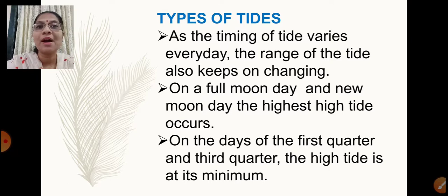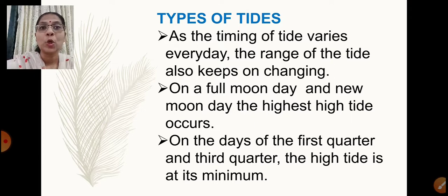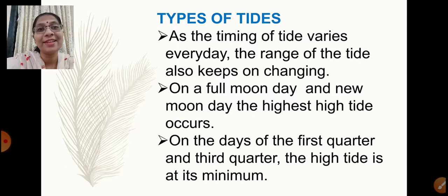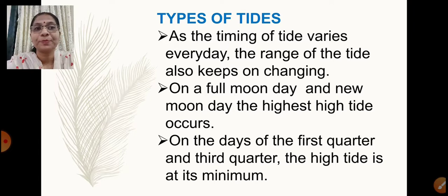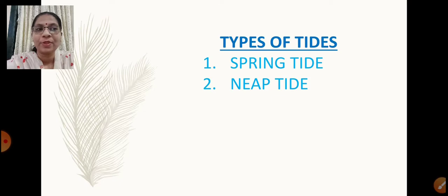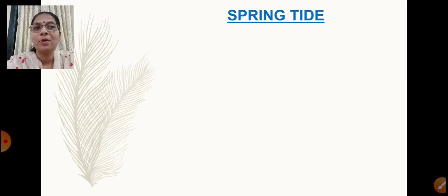The first quarter comes after the new moon day and the third quarter comes after the full moon day, so on these two days the high tide will be at its minimum. The level of water rising will be lower than the average high tide, while on the full moon day and new moon day the level of water rising will be higher than the average high tide. These two types of tides are called spring tide and neap tide.